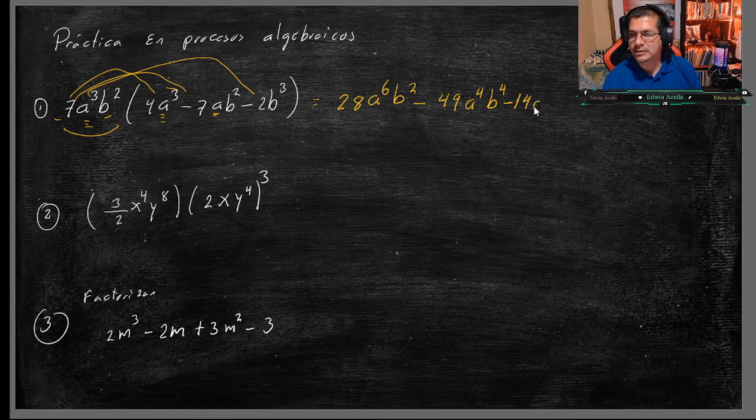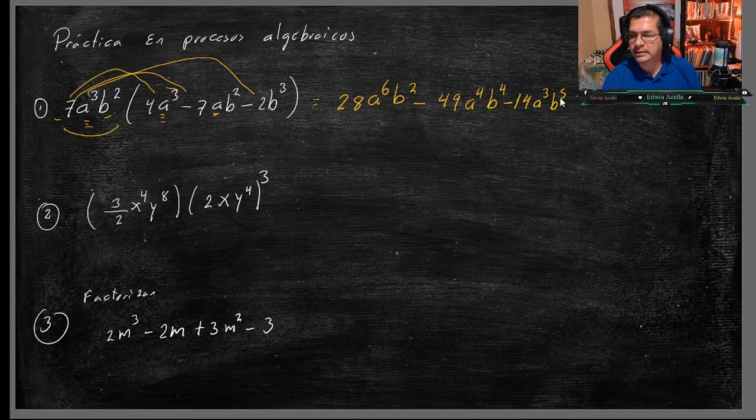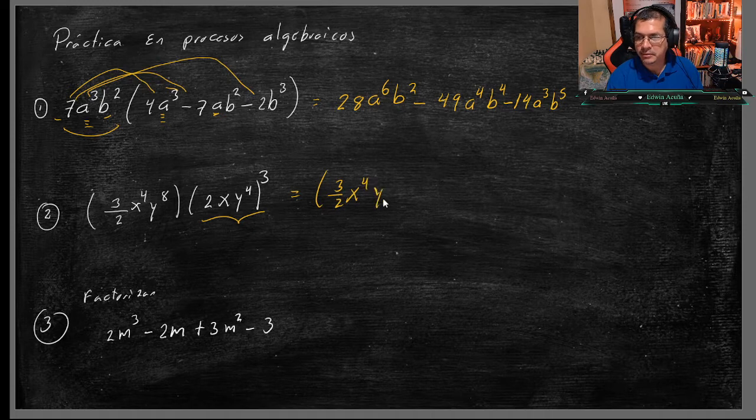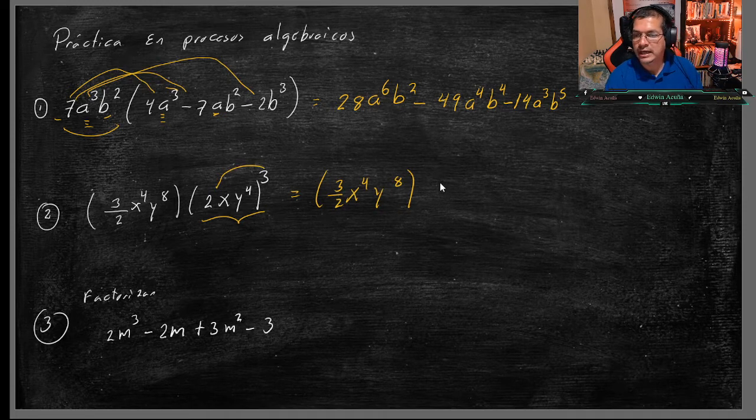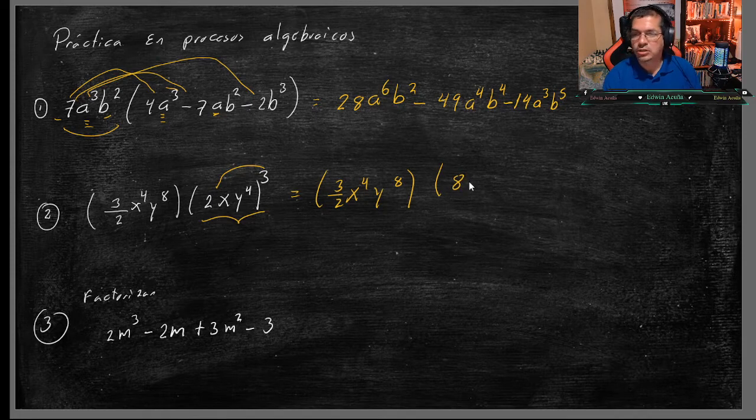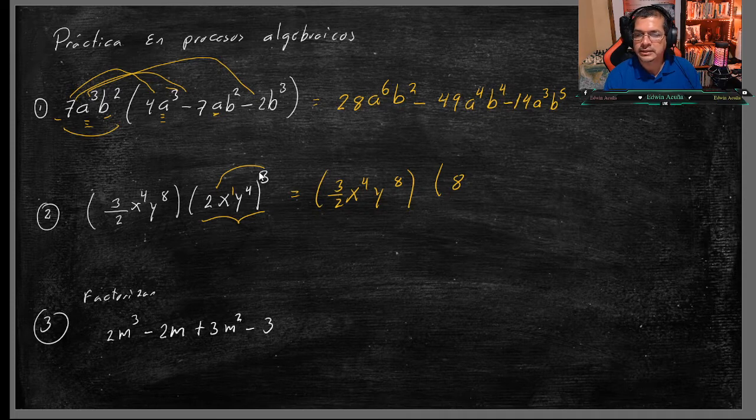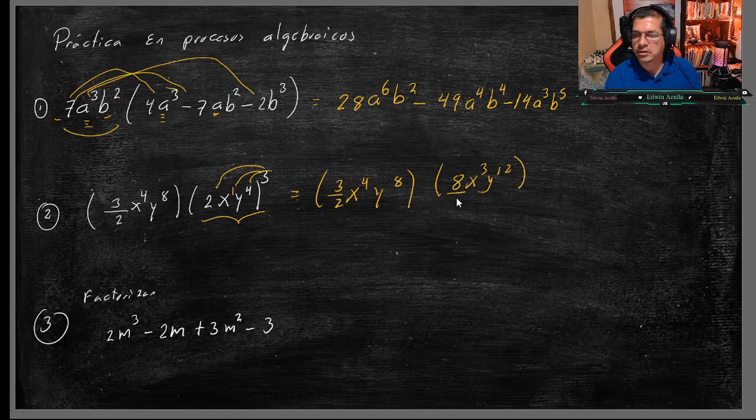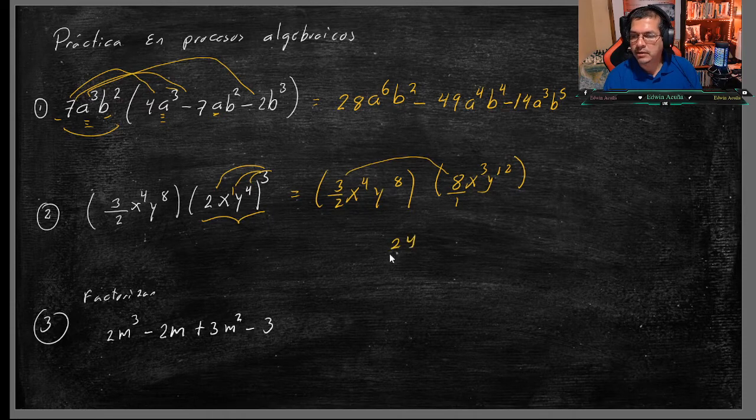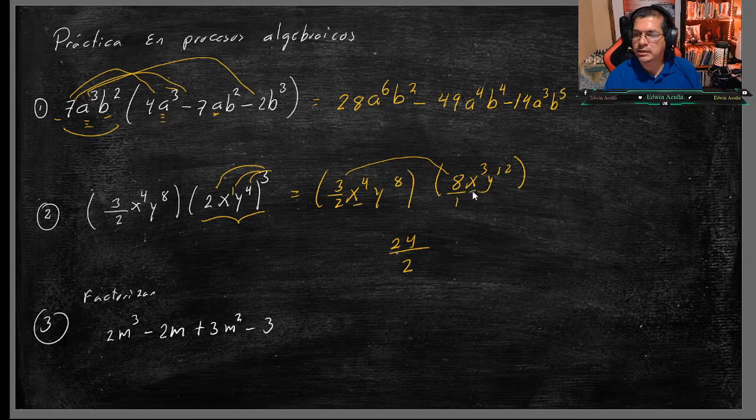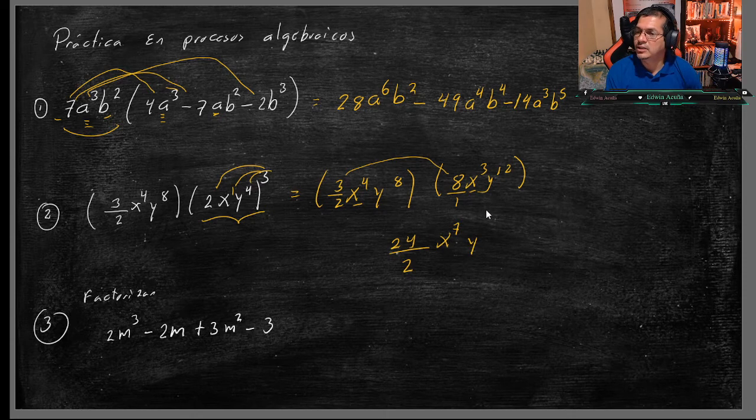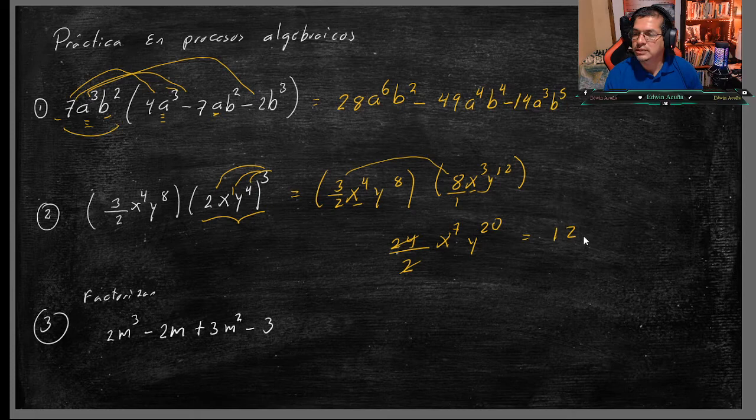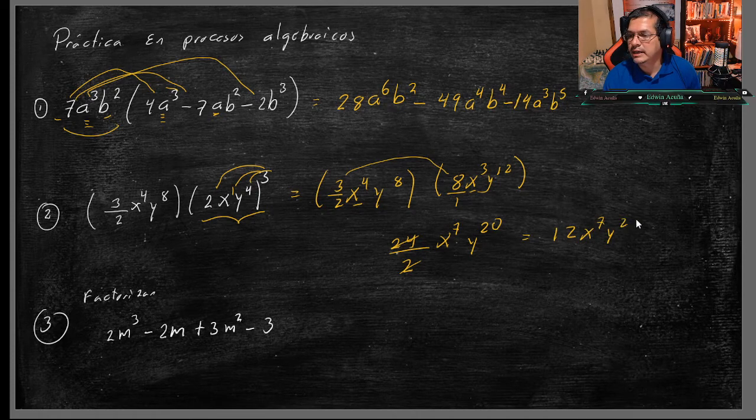Y de igual manera, A a la 3 no tiene ninguno, se pone B a la 2 por B a la 3 sería B a la 5. Y se acabó. Este es un 1, multiplico 3 por 8, serían 24, 2 por 1 es 2, después simplifico. X4 por X3 sería X7, y Y8 y Y12 sería Y20. Simplifico, siempre hay que simplificar al máximo, me quedaría 12 sobre 1, X a la 7, Y a la 20 y se acabó.